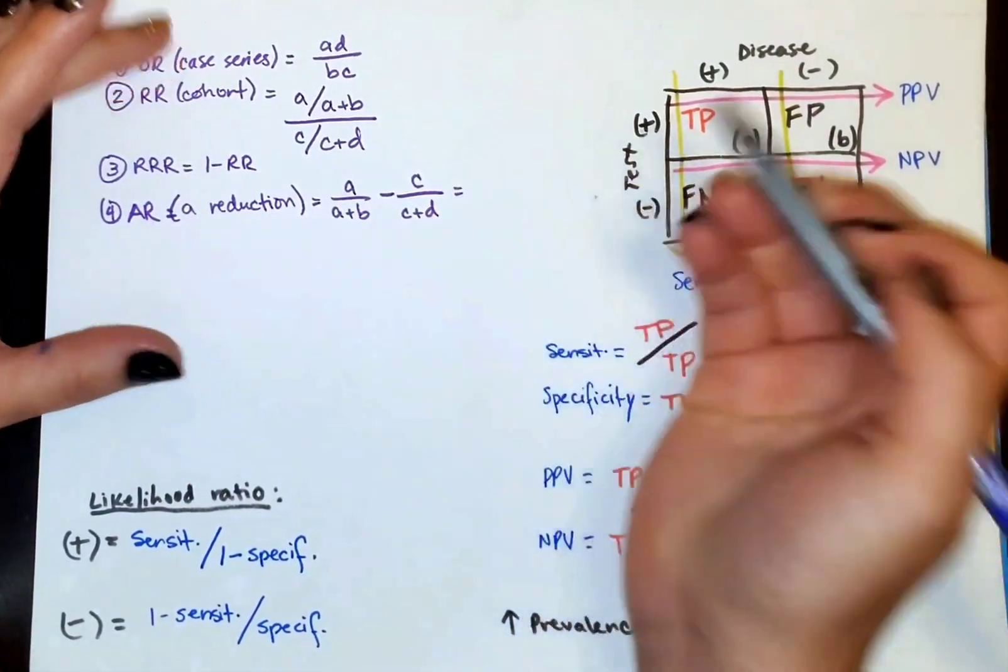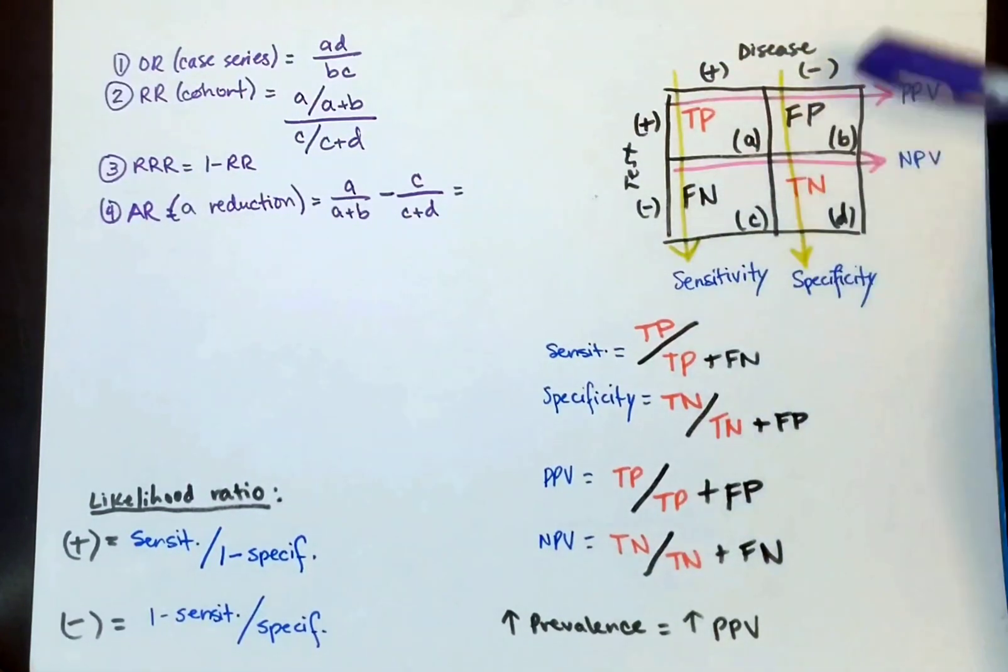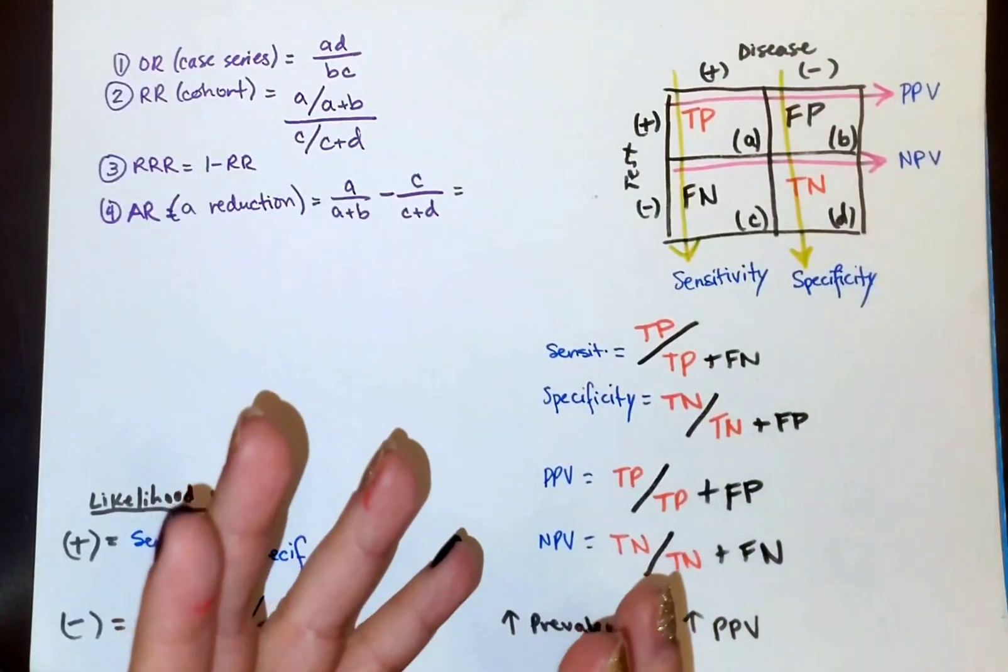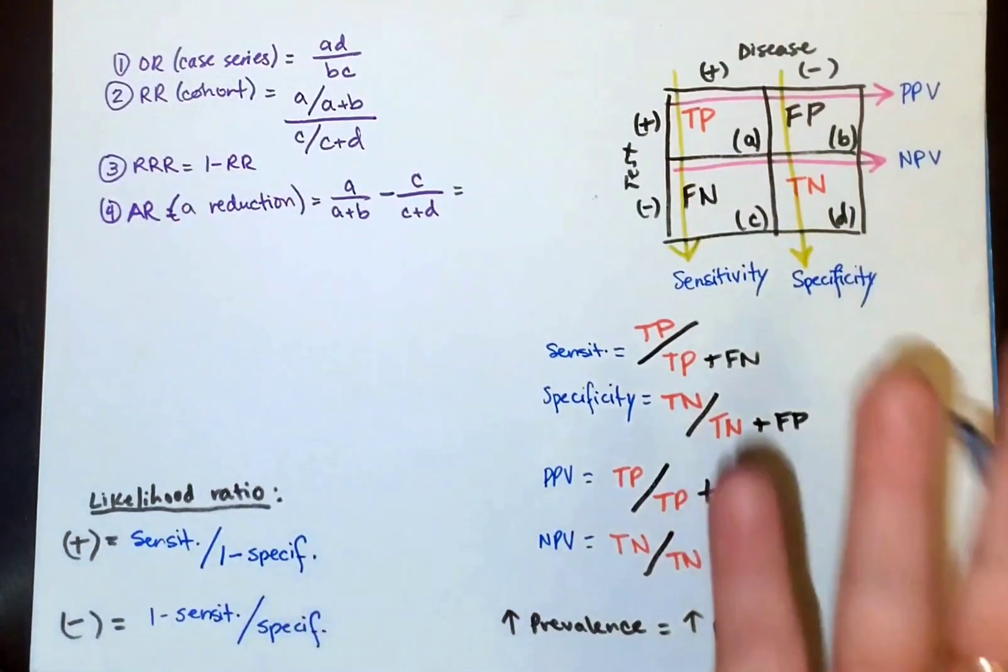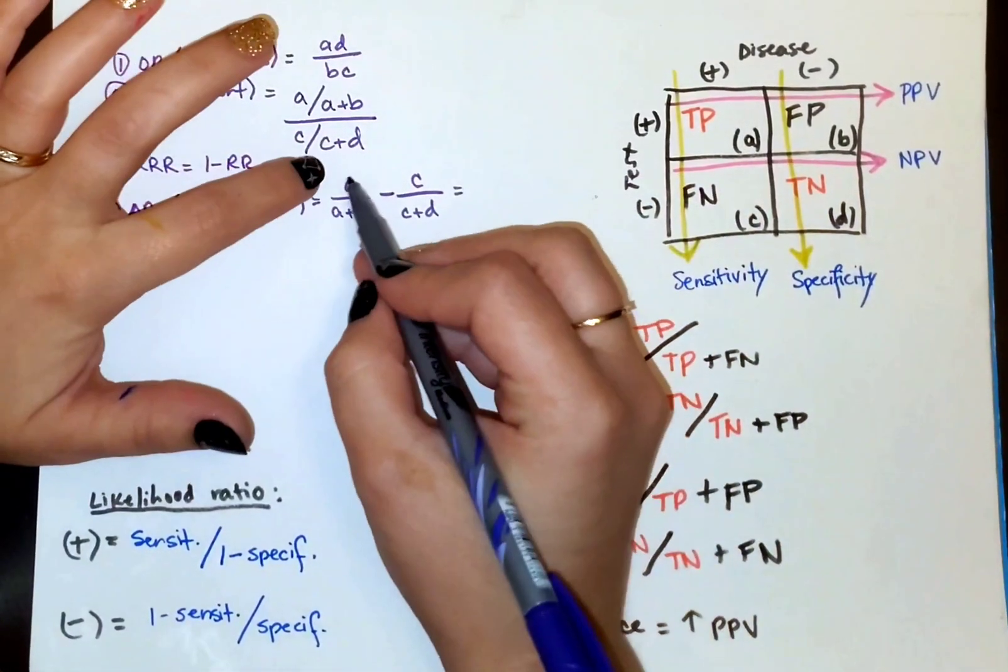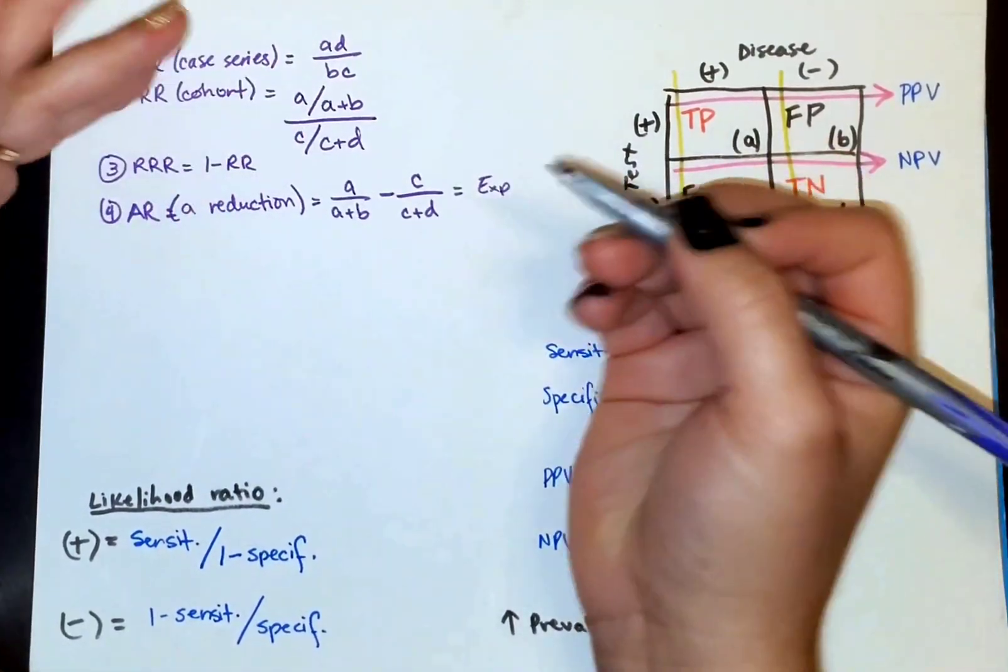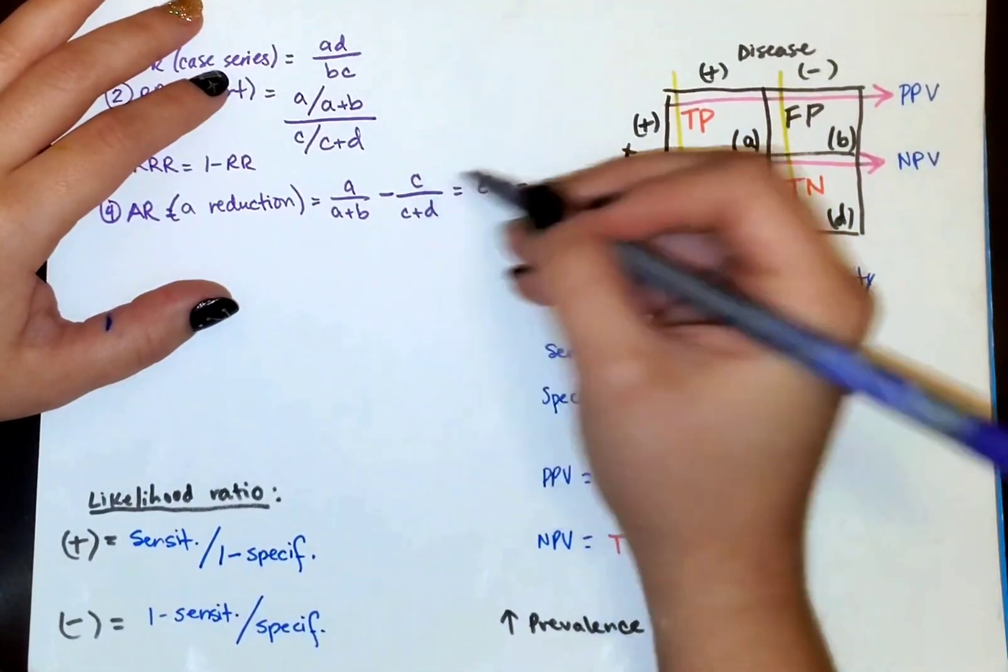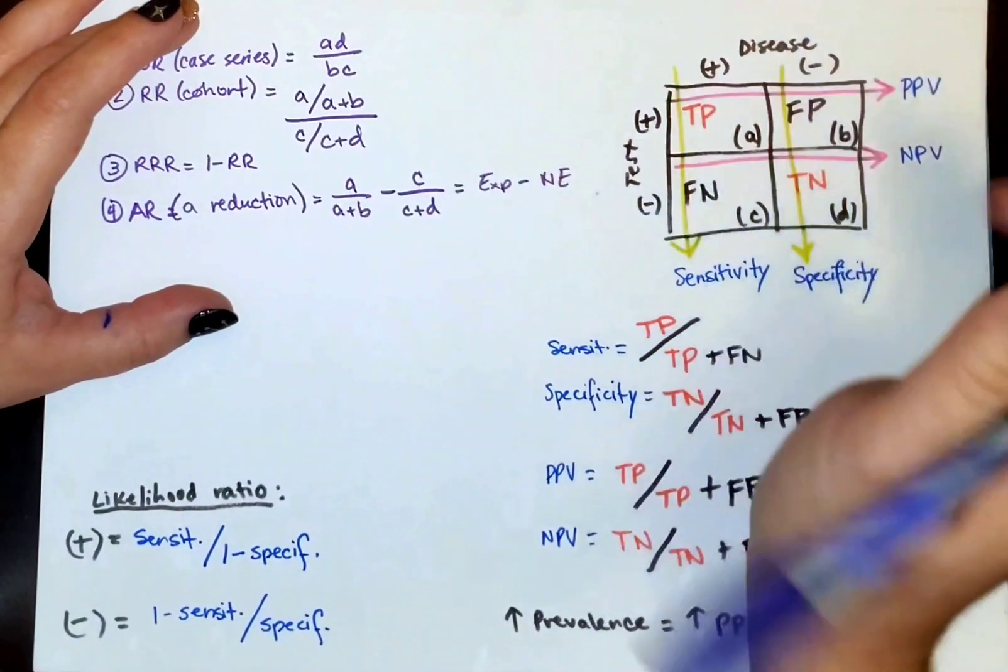Another way I like to look at this because questions will ask differently, they might not give you a table, they might just talk about people who have an exposure, and people who don't have an exposure or have a medication and another group who's the control group or has a placebo. So I just kind of think of it the first group is always going to be like the exposed group, a group that's taking the medication. And the other group, the c group is going to be the non exposed. They're getting the placebo.